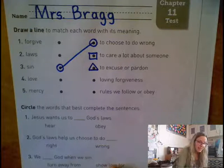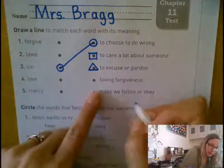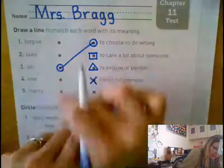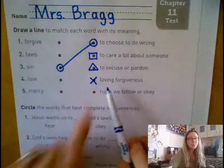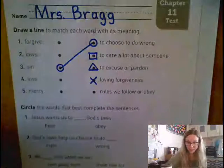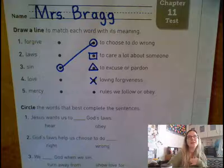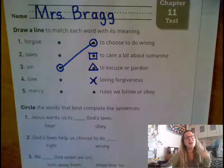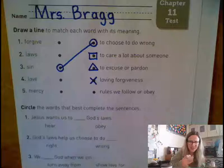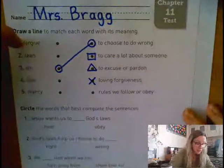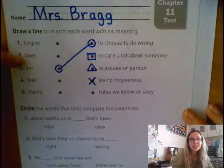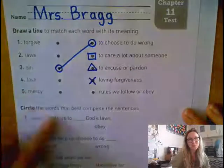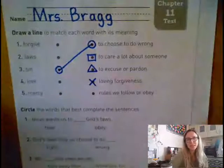The next one, I am going to put an X on the dot. Put an X on the answer and connect them. This one is loving forgiveness. When we ask God to show us loving forgiveness, we say God, have this on me — his loving forgiveness. Is that called forgive, laws, love, or mercy? Put an X on your answer and connect them.